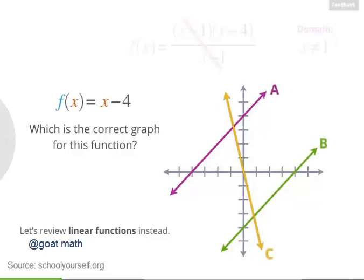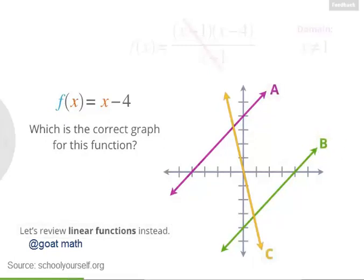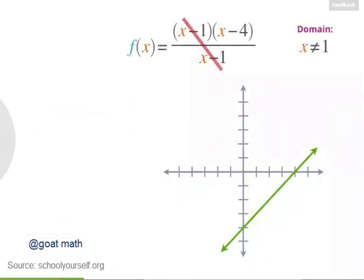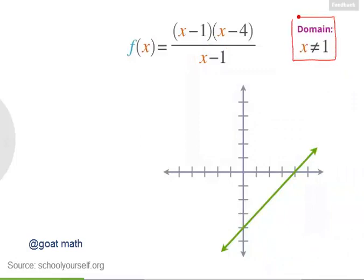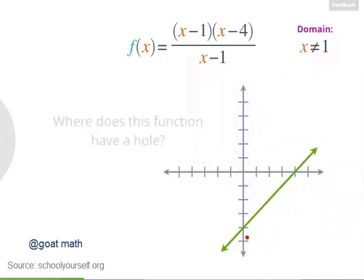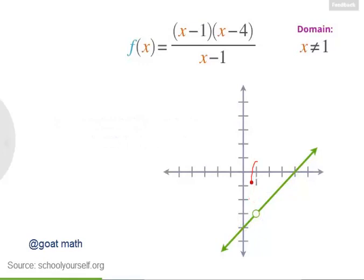Which of these lines is the correct graph for this function, f of x equals x minus 4? This green line is the function x minus 4. But our original function had x minus 1 in both numerator and denominator, and because x minus 1 is in the denominator, x equals 1 was not part of the domain. So this function has a hole where x equals 1.